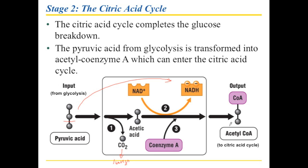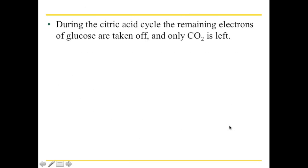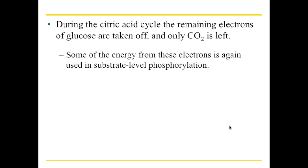Now that can be moved into the citric acid cycle. What happens during the citric acid cycle? Well, there are some molecules cycling. You're feeding your leftover bits of the glucose into an existing cycle that basically crunches and digests them. During the citric acid cycle, we're moving the remaining electrons off the glucose, and then only carbon dioxide will be left. We can also do a little bit of substrate-level phosphorylation because we end up with a couple of phosphate groups attached to some molecules we can use for that.